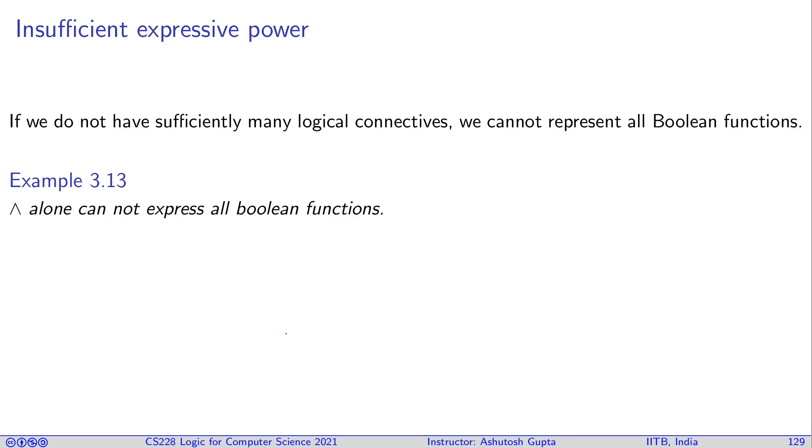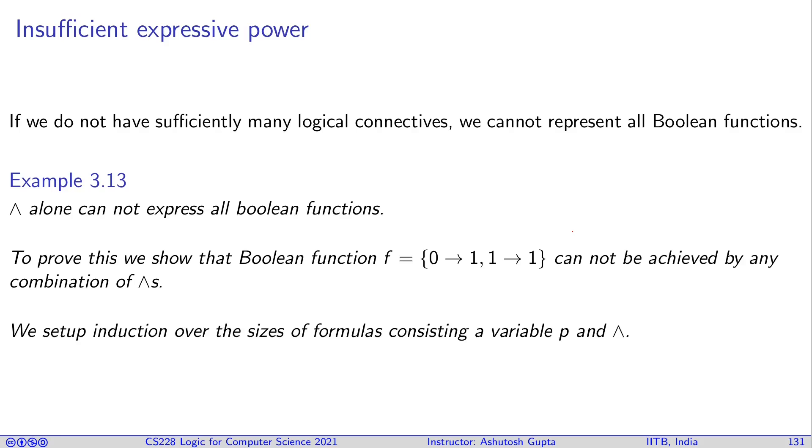Let's say we have conjunction, and conjunction alone cannot express all Boolean functions. To prove this, we show that the Boolean function where 0 maps to 1 and 1 also maps to 1 cannot be achieved by any combination of conjunctions. We set up induction over the sizes of functions consisting of variable p and conjunction.